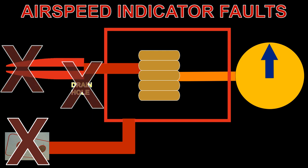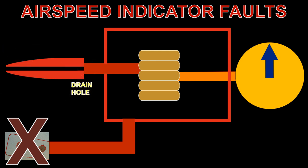If the static ports are blocked but the pitot tube remains open, the ASI will operate, but inaccurately.